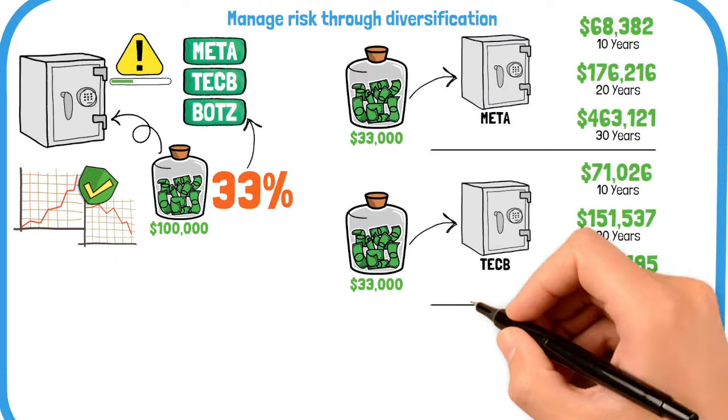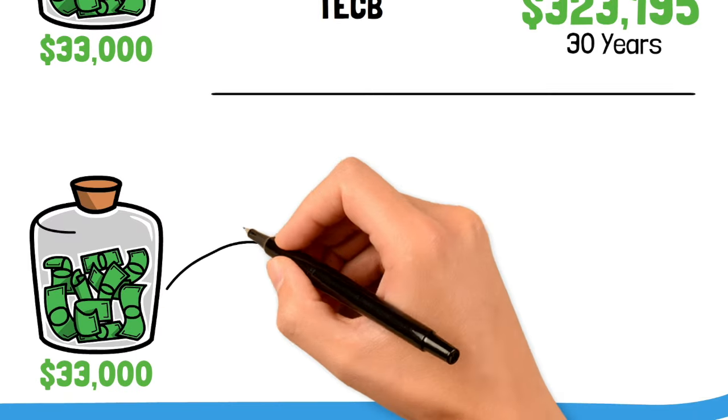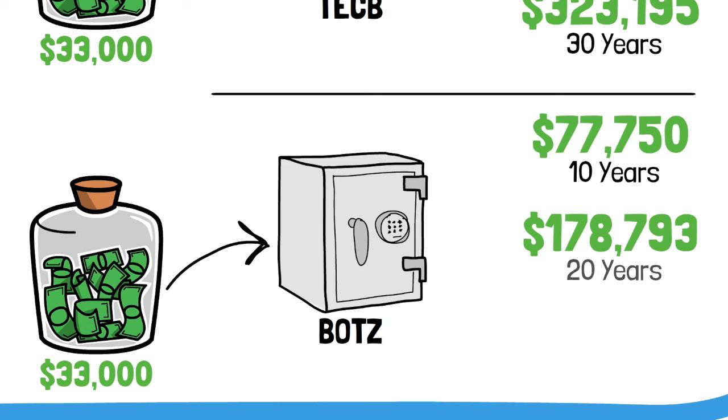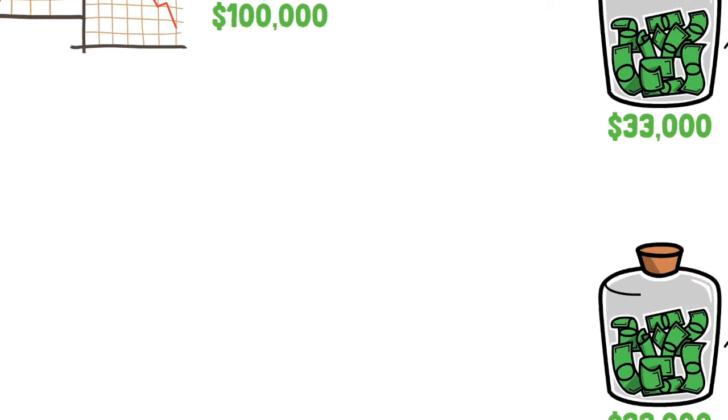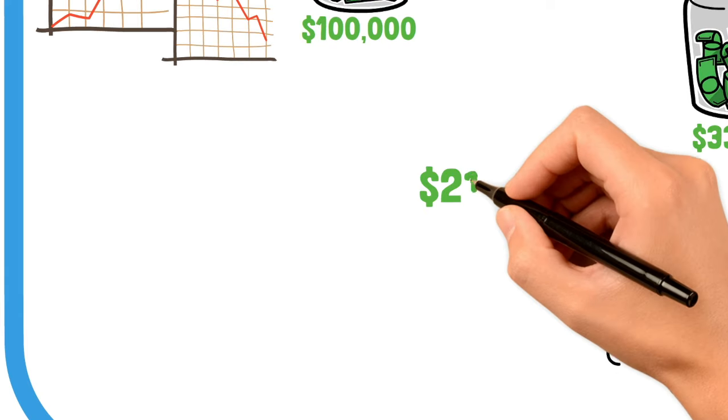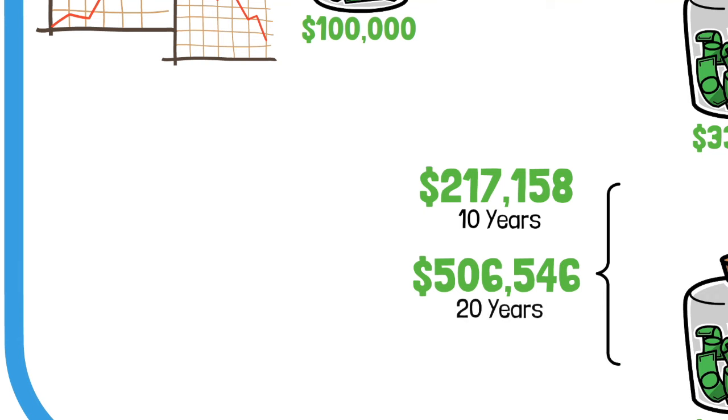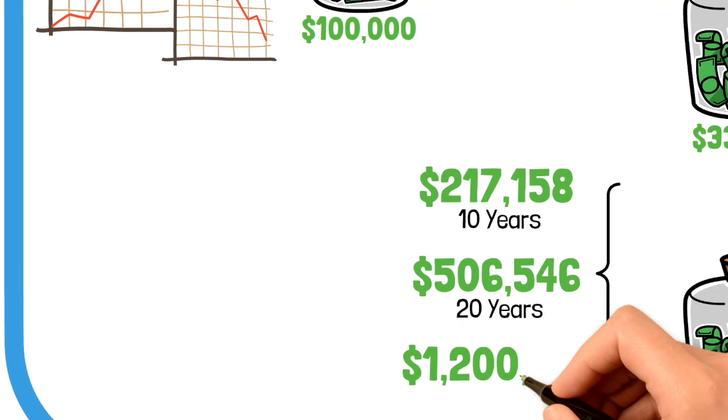Lastly, BOTZ could grow to around $77,000 in 10 years, $178,000 in 20 years, and $413,000 in 30 years. Combining these investments, the total portfolio value could reach $217,000 after 10 years, $506,000 after 20 years, and an impressive $1.2 million after 30 years.